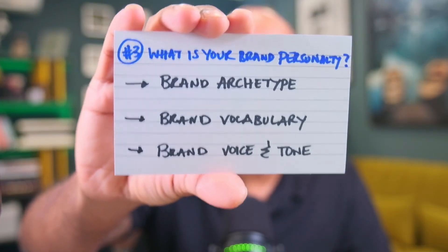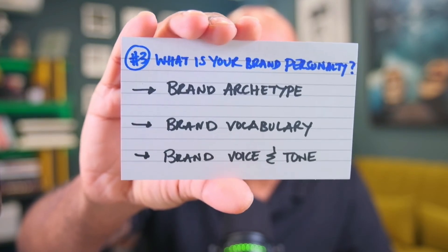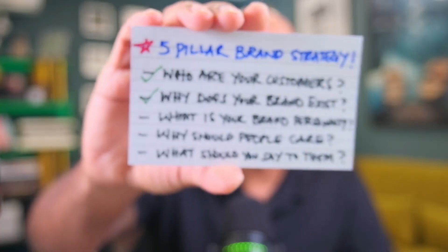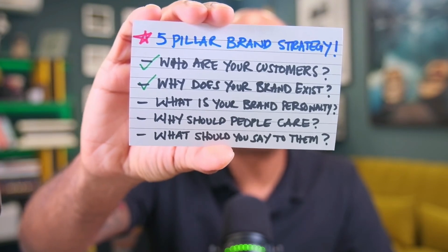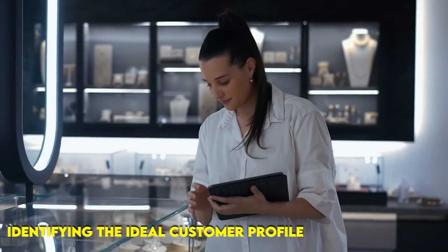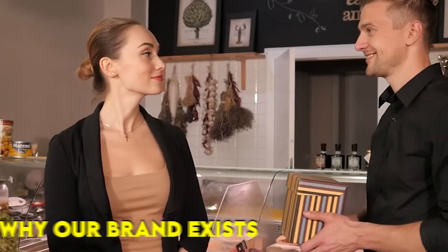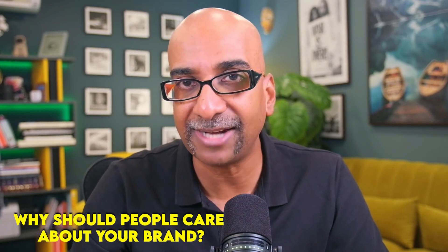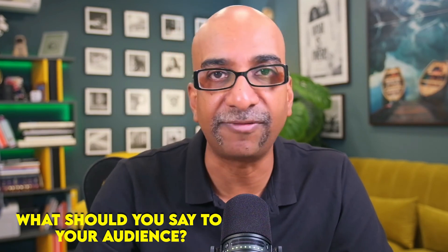For the brand personality pillar, we've looked at identifying the brand archetypes, creating our brand vocabulary, and identifying and creating our brand voice and tone. These three primary tasks answer our third pillar question: what is your brand personality? Identifying and creating your brand personality is a million-dollar asset. Combined with pillar one — identifying the ideal customer profile — and pillar two — understanding why your brand exists — this is where the magic happens. The next two pillars are: why should people care about your brand, which is the brand story, and what should you say to your audience, which is the messaging framework.